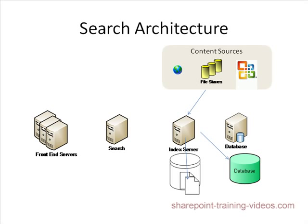The index files that exist on the index server get propagated to the search server. If you have multiple search servers, the index files are propagated to all of them. This propagation happens over the network, so if you have huge index files it will send small bits across. If your index server has 100 gigs of indexed data, make sure your front-end server has the same amount of disk space.